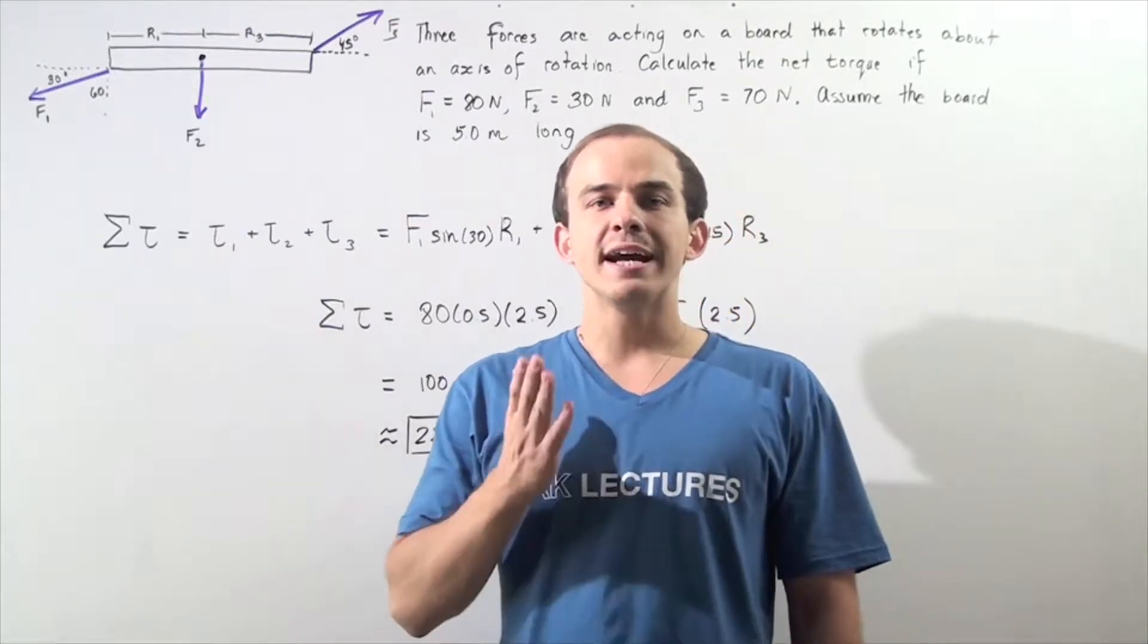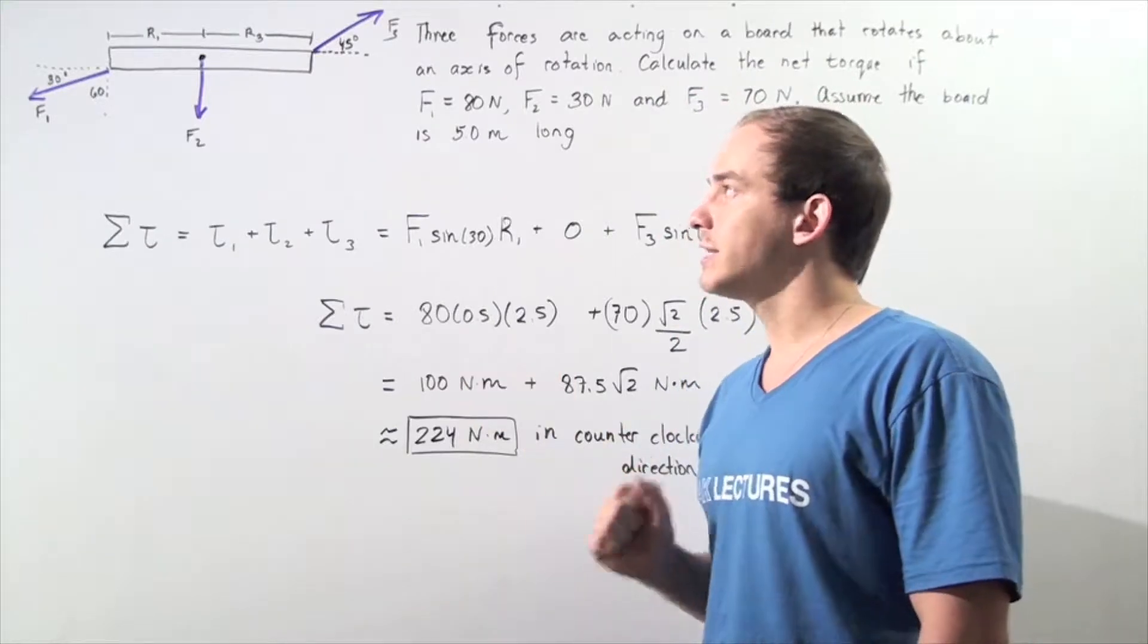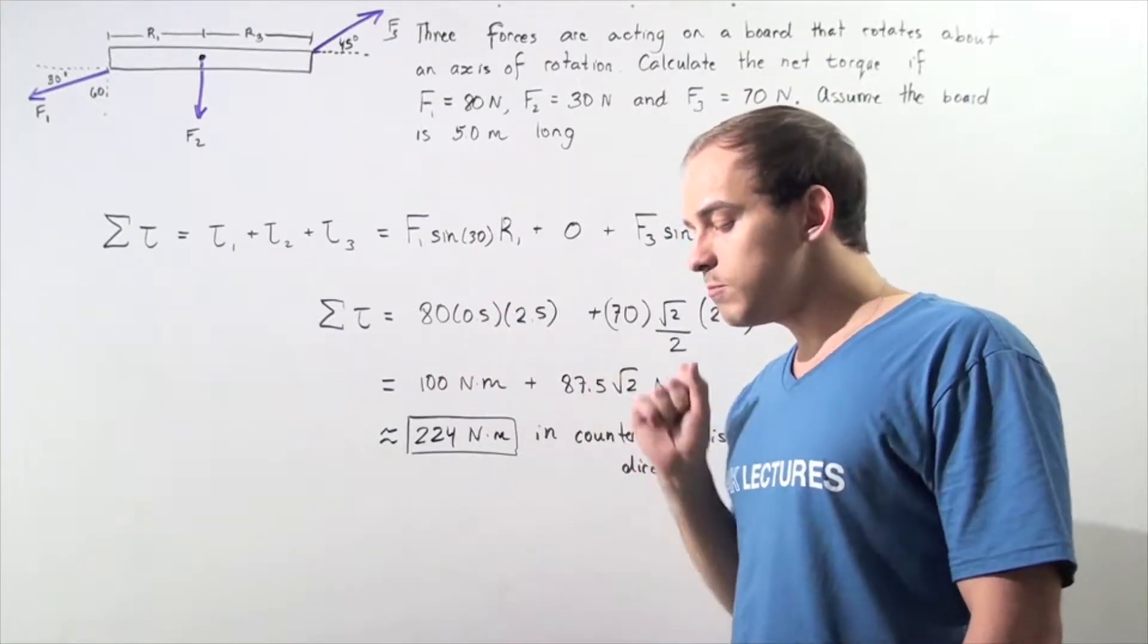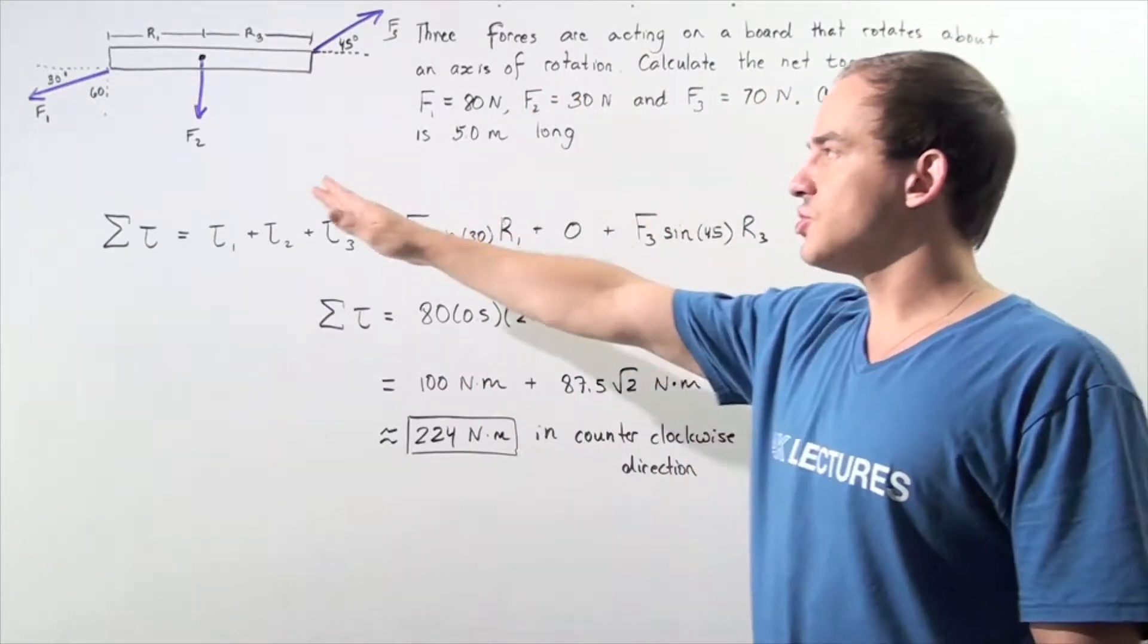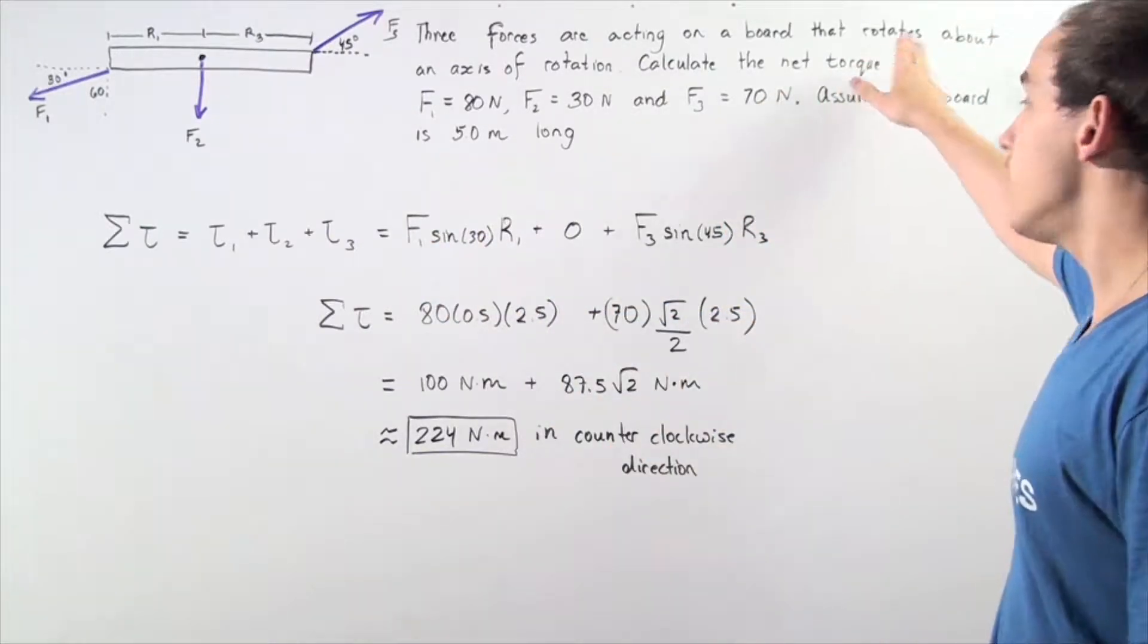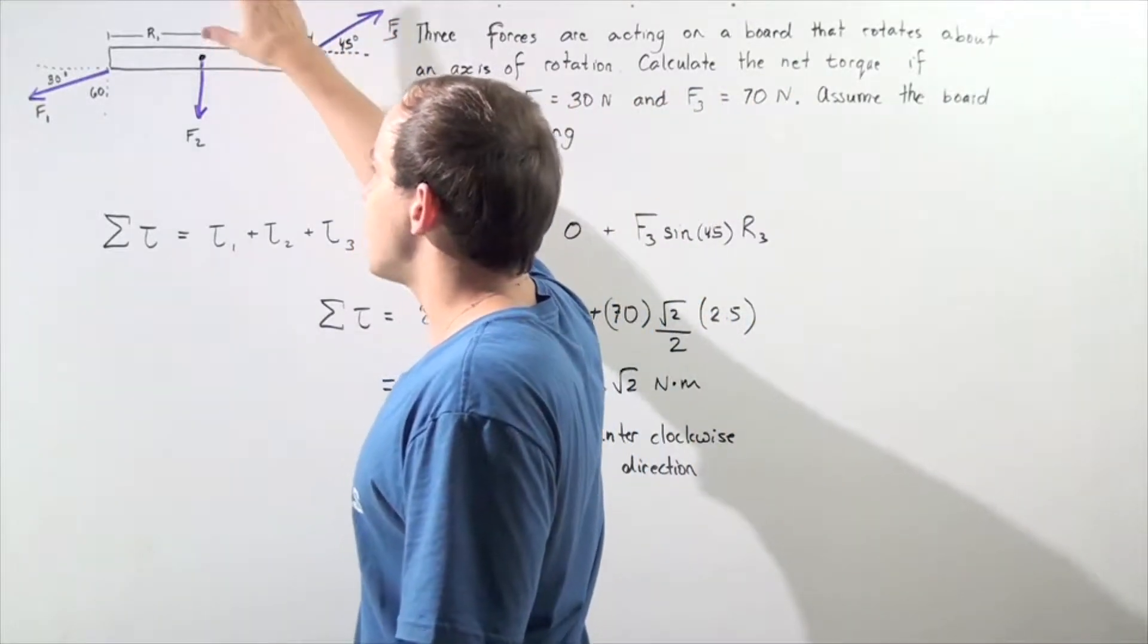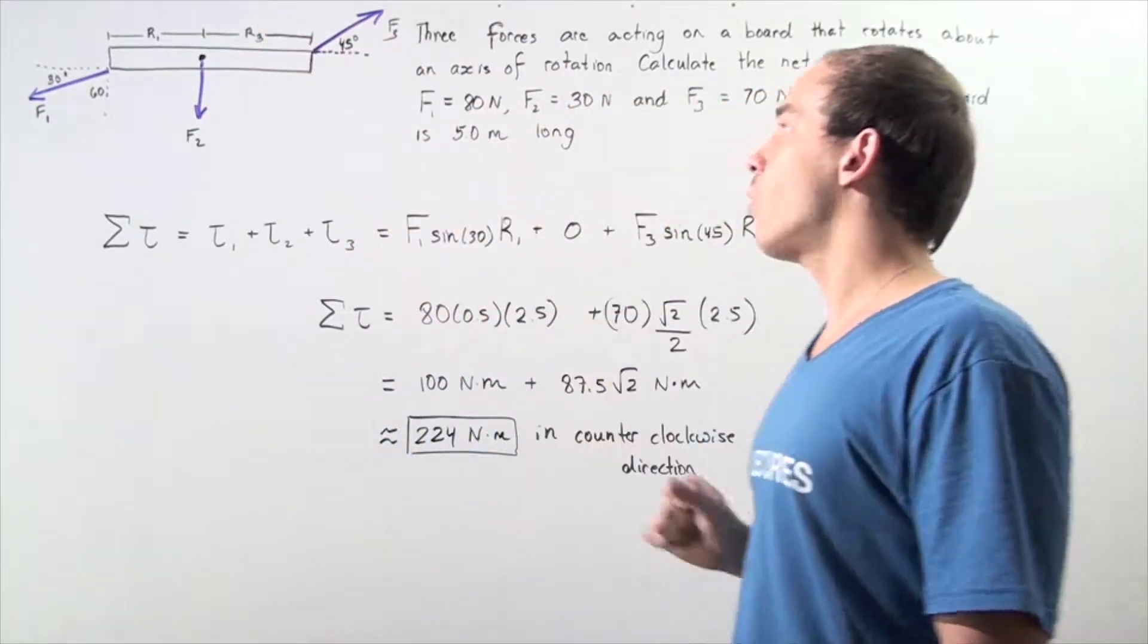In this example, we'd like to once again calculate the net torque acting on our object, the board. Now, let's suppose we have three forces, as shown, that are acting on our board, that is rotating about an axis of rotation found at the center of mass right in the middle of our board.